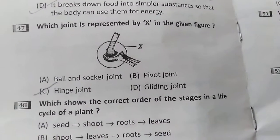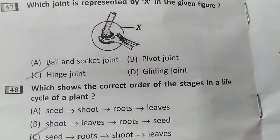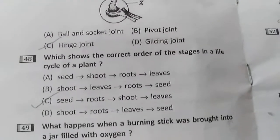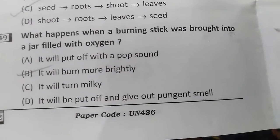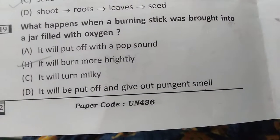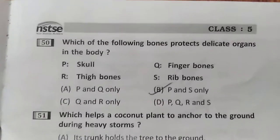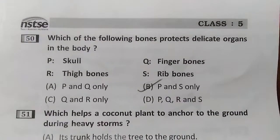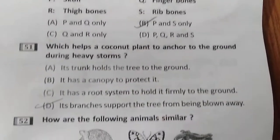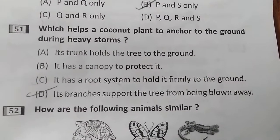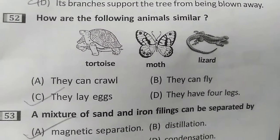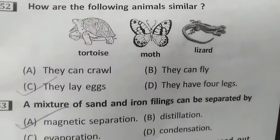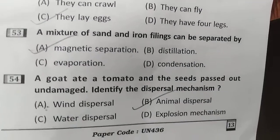Question number forty-seven, forty-eight, forty-nine. Then question number fifty, fifty-one, fifty-two, fifty-three, and fifty-four.